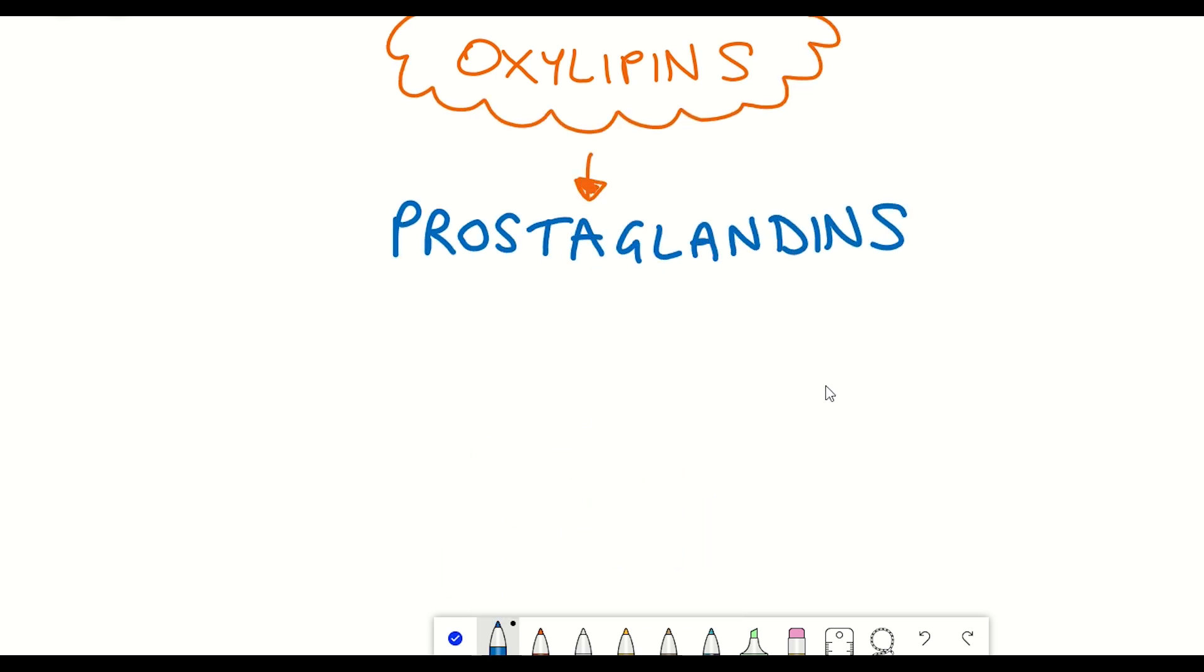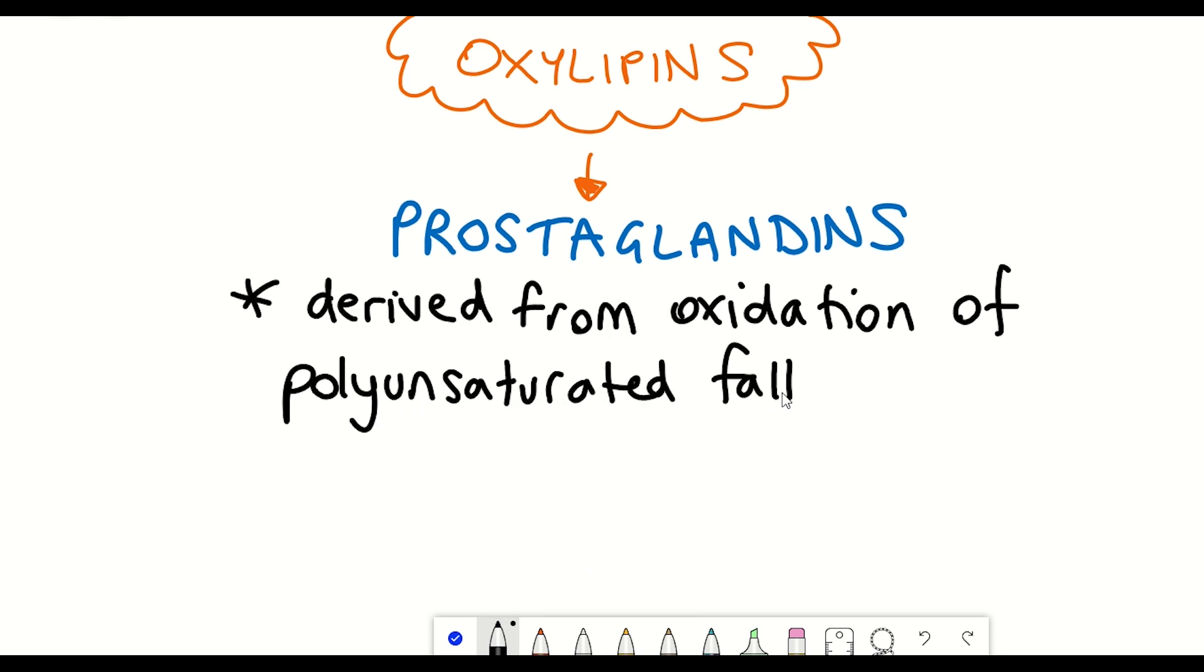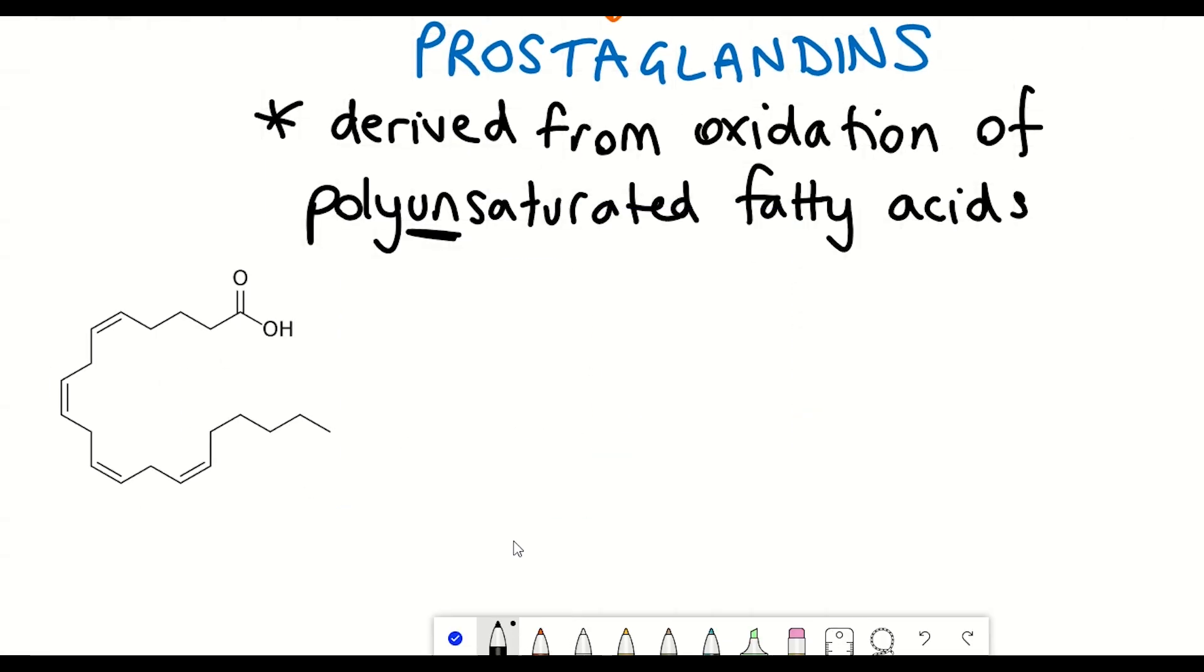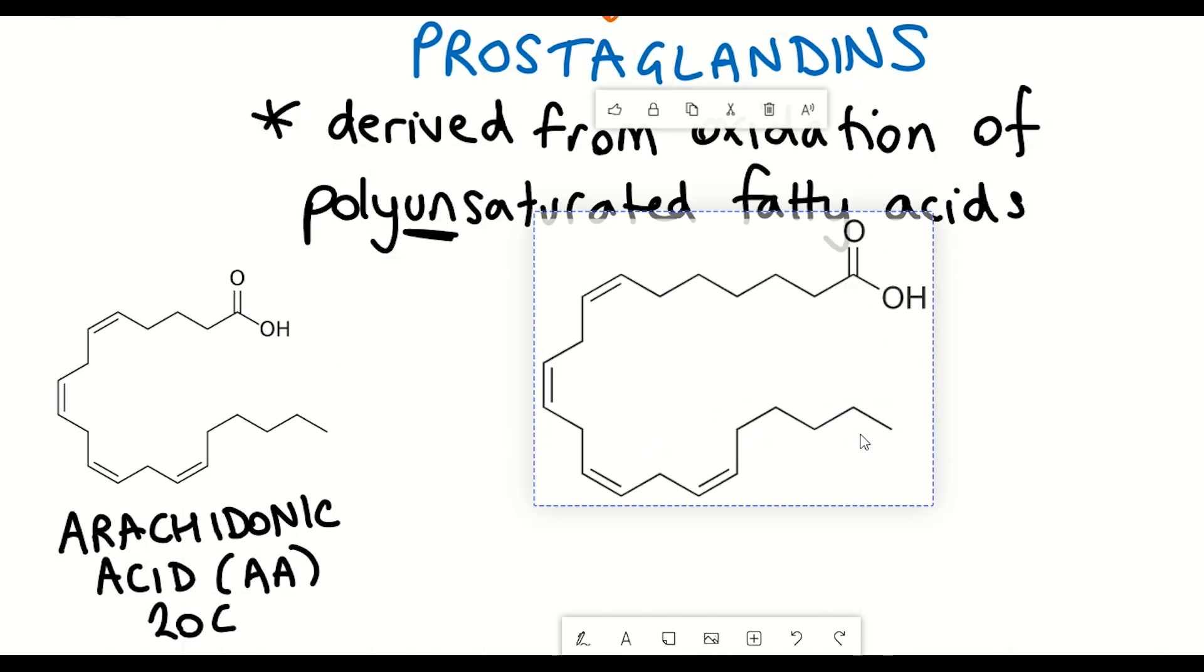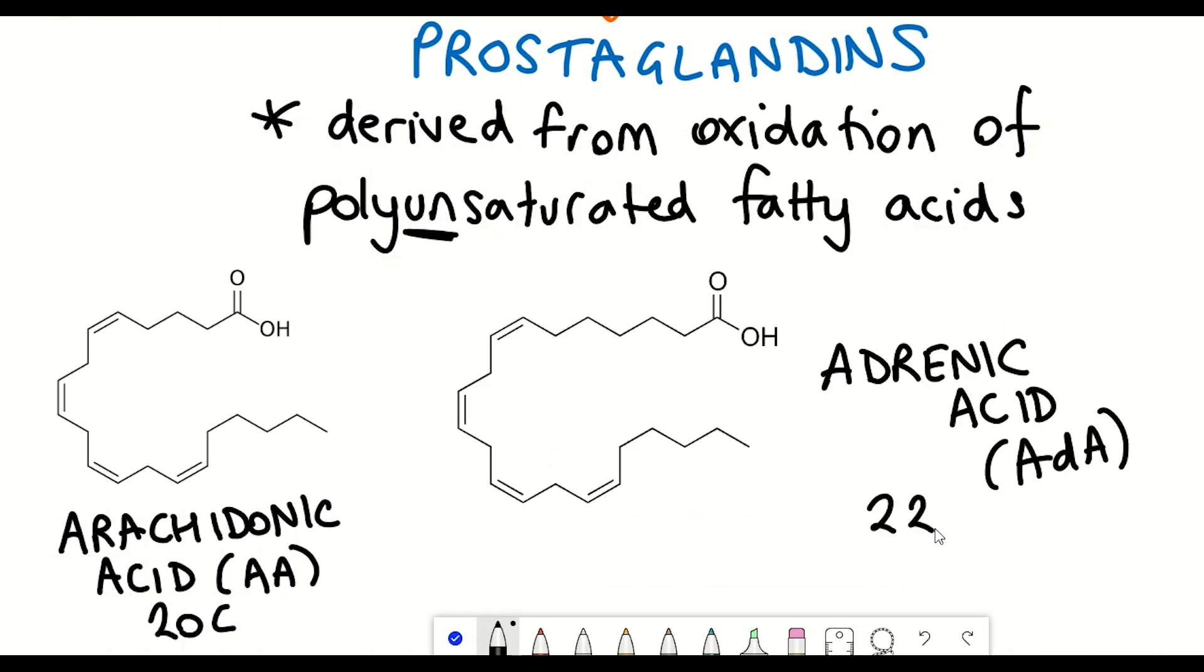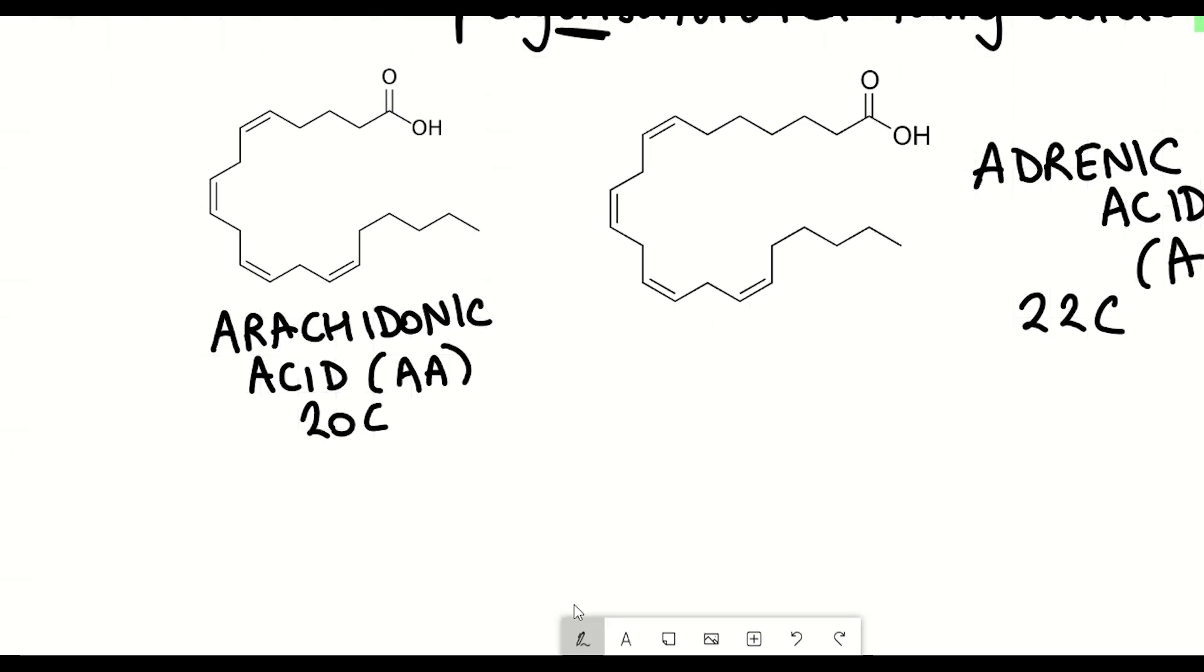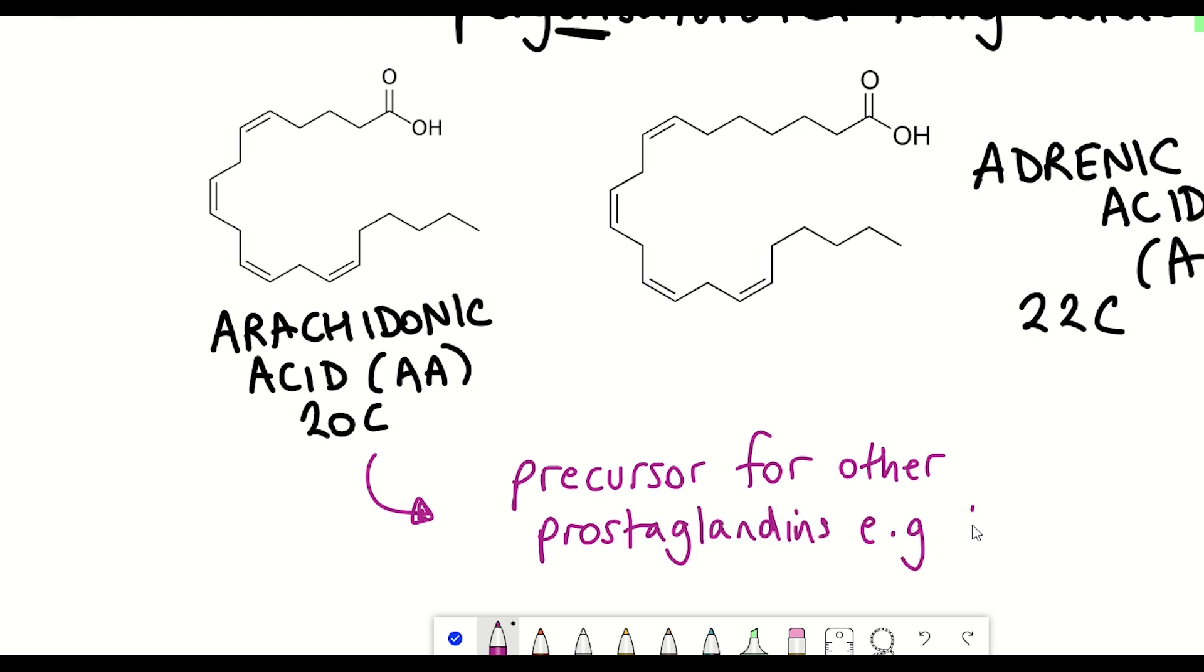Anyway, prostaglandins are a subset of oxylipins, which are a really interesting group of lipids that are derived from the oxidation of polyunsaturated fatty acids. Most notably, the 20 and 22 carbon fatty acids such as arachidonic acid and adrenic acid with dihomo-15-D-PG-J2 deriving from an adrenic acid. And so these dihomo-prostaglandins have been less well investigated than the prostaglandins that derive from arachidonic acid, the most famous which is probably prostaglandin E2.